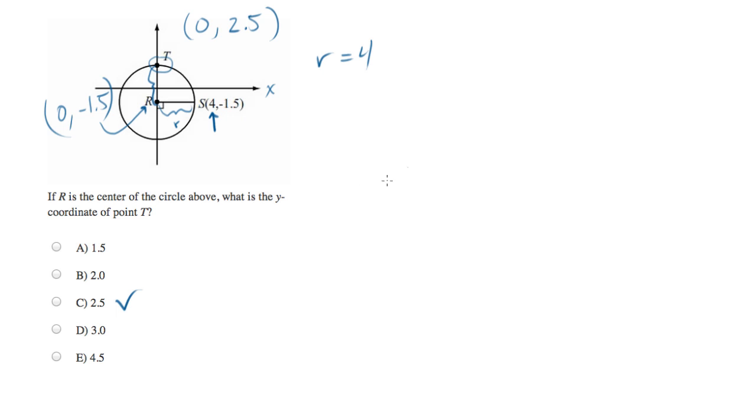If you want an algebraic way to calculate that, you can use the distance formula. The distance formula is very similar to the Pythagorean theorem and basically says the distance equals the square root of (x2 - x1) squared plus (y2 - y1) squared.